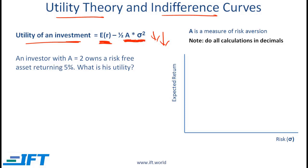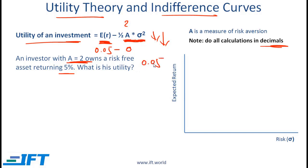Let's do a simple exercise. An investor has a risk aversion of 2 and owns a risk-free asset returning 5%. What is the utility? We plug into the formula: utility equals 0.05 minus half of 2 times sigma squared. Since this is risk-free, sigma is 0, so utility equals 0.05. If we plot this, at a risk of 0 the utility is 0.05.